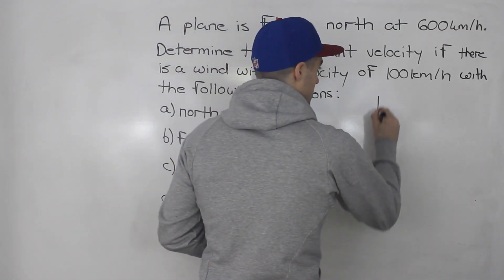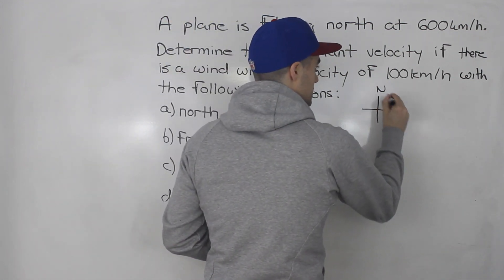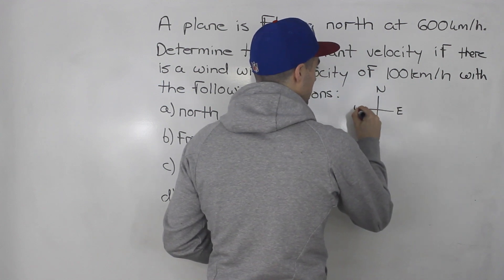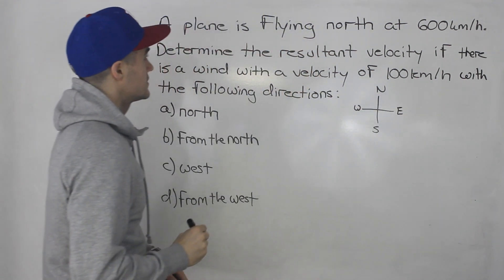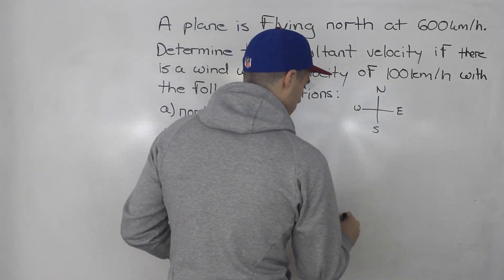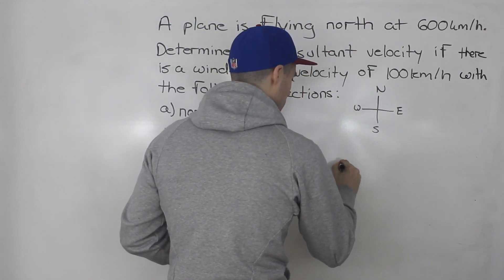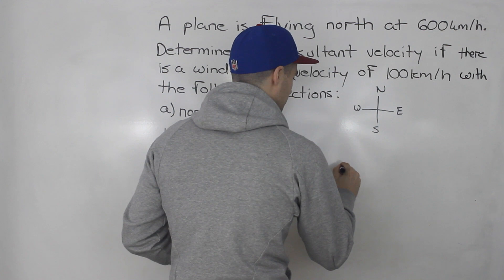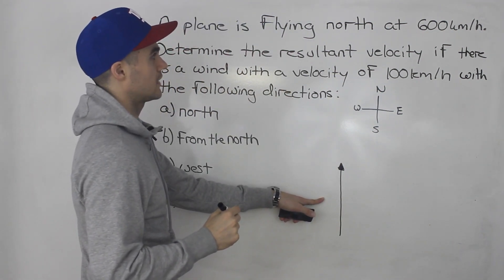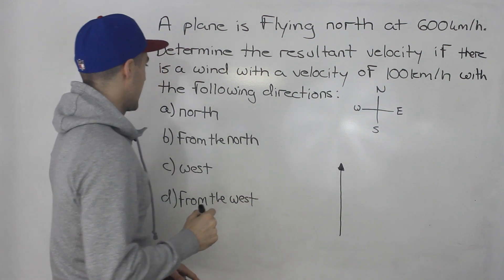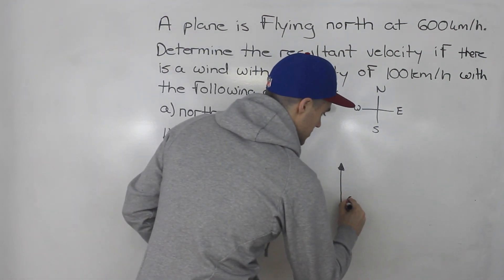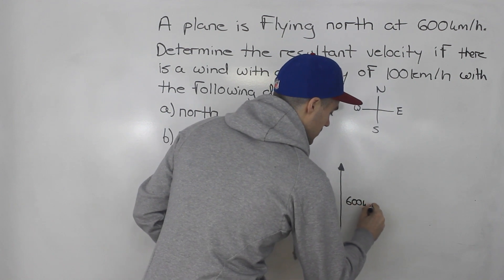To start off, let's put a little compass here. So this is north, south, east, and west. So a plane is flying north at 600 kilometers per hour — that is the vector of the plane. Let me label this 600 kilometers per hour.